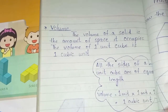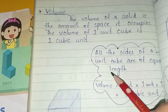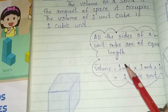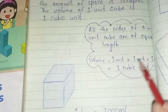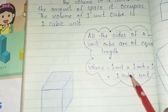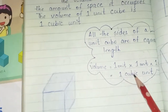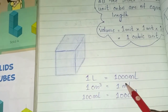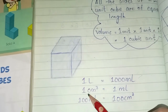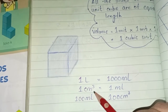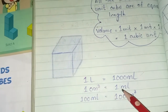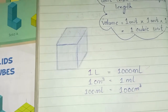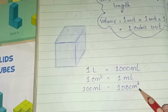All the sides of a unit cube are of equal length. Each side is one unit, so one multiply one multiply one is one cubic centimeter. Here we have: one liter is one thousand milliliter, one cubic centimeter is one milliliter, and one hundred milliliter is one hundred centimeter cube.